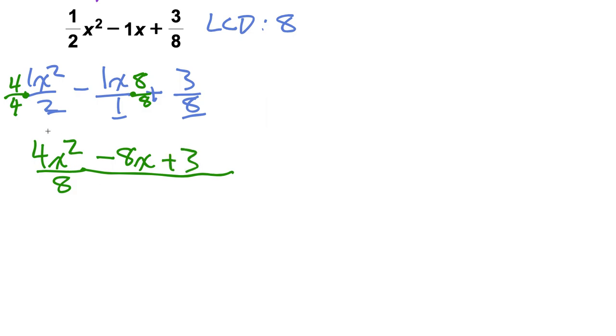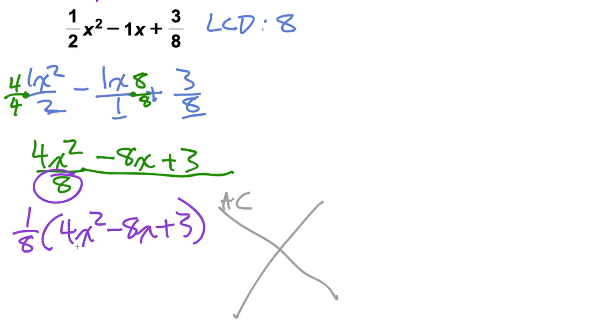You know the next step, we're going to factor out that 8 as one-eighth. Then it would be 4x squared minus 8x plus 3. And you know the AC game.